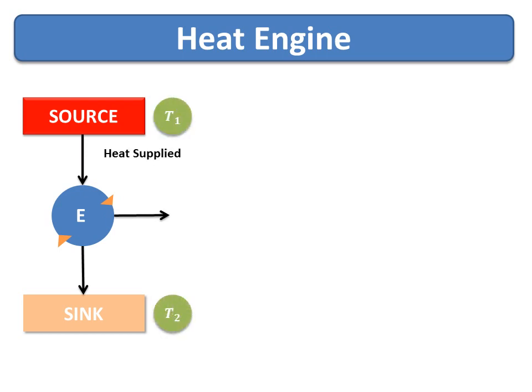As shown here, in the case of the heat engine, we have the source at a higher temperature T1 and the sink at a lower temperature T2. Heat is supplied from the source, and out of this total heat supplied, some part is converted into work and the remaining part is rejected. So 100% conversion of heat into work is not possible, and therefore heat is known as low grade energy.